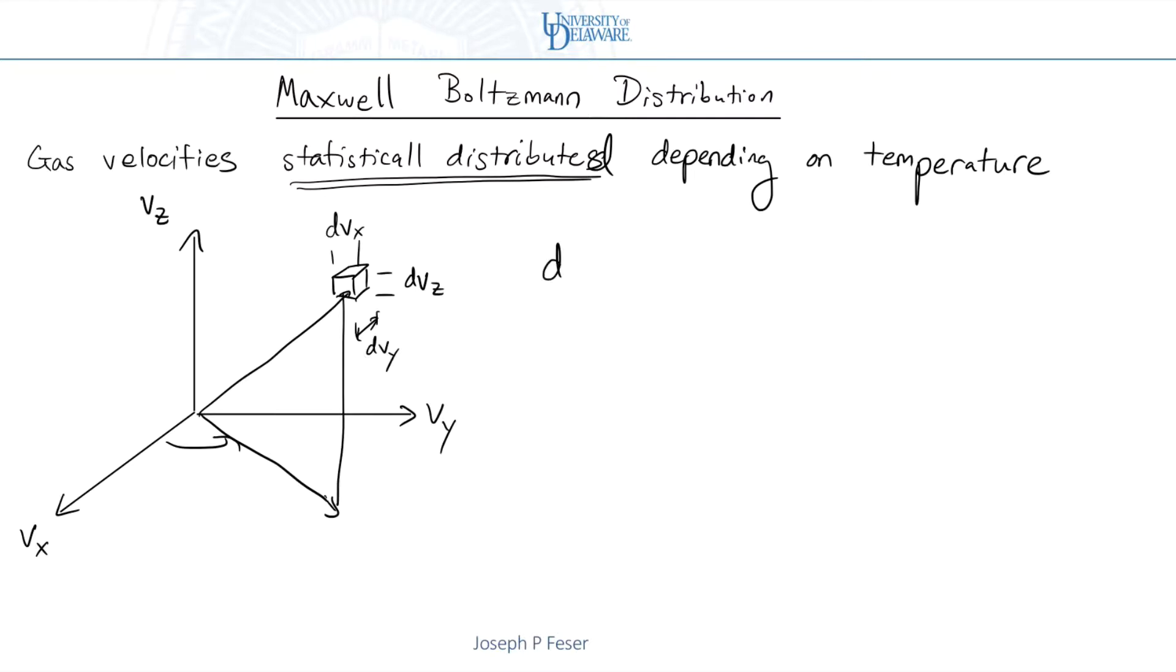So essentially the number of molecules that fall into this little box that's located at VX, VY, VZ divided by the total number of atoms in a room full of gas would have to follow the Maxwell-Boltzmann distribution, which is M divided by 2 pi KBT to the 3 halves, E to the minus MV squared over 2 KBT times DVX, DVY, DVZ.